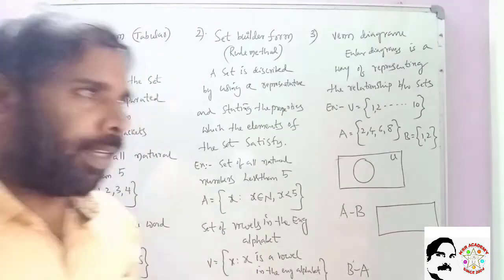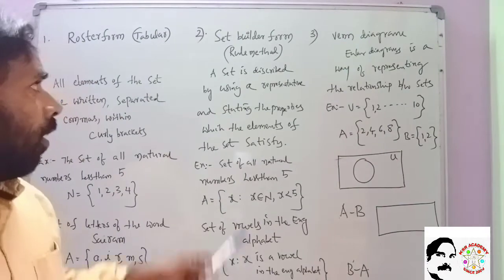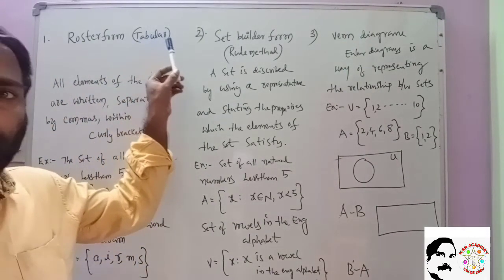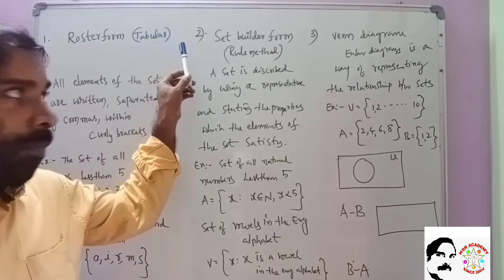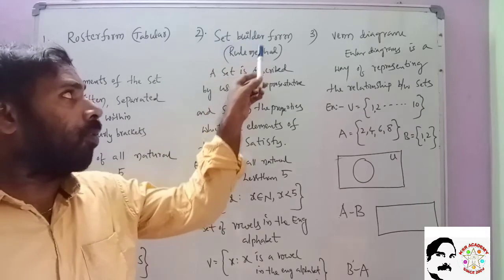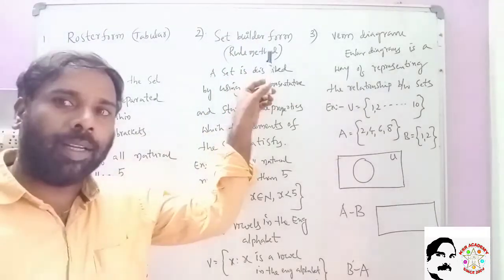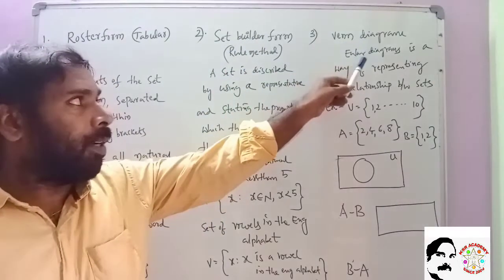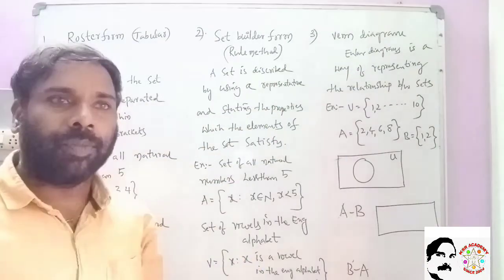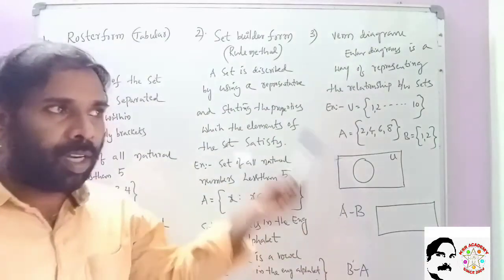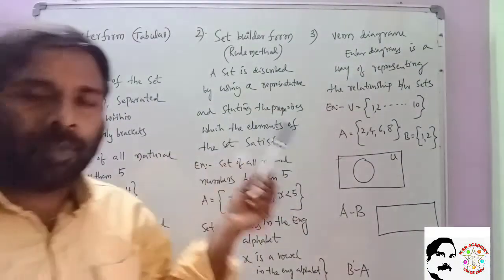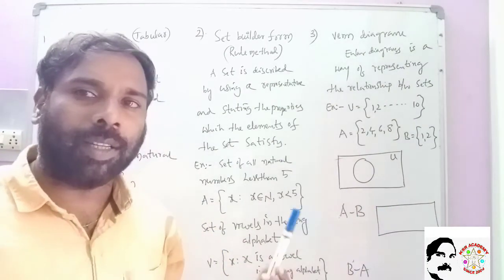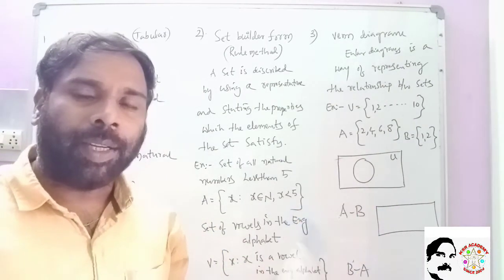In the last video, we talked about Roaster Form and Set Builder Form, as well as Venn Diagrams — also known as the Euler Diagram.